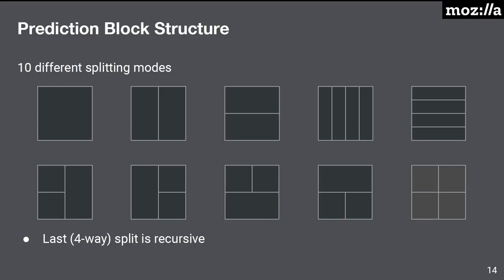What does the prediction block structure look like? In VP9, there were four types of splitting. In AV1, we have 10: the same horizontal, vertical, and quad splits, but we've also added half-splits on left/right and top/bottom, plus four-to-one prediction blocks. The four-way split is recursive. We tried recursive splitting on other block types but it didn't give us the gain, so we kept recursion in just one place.